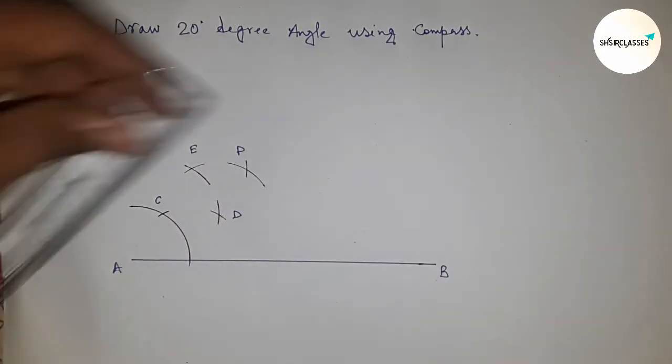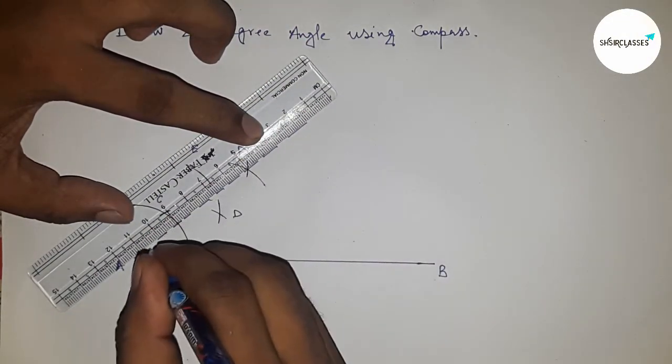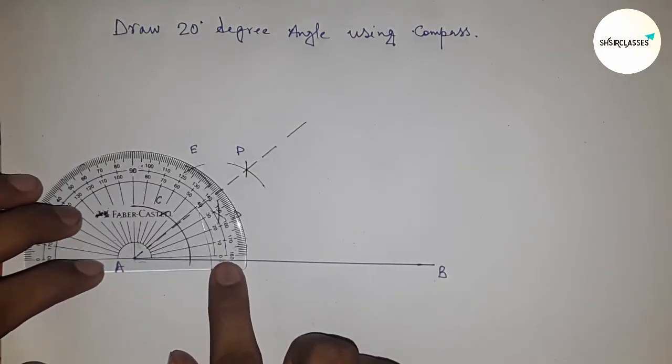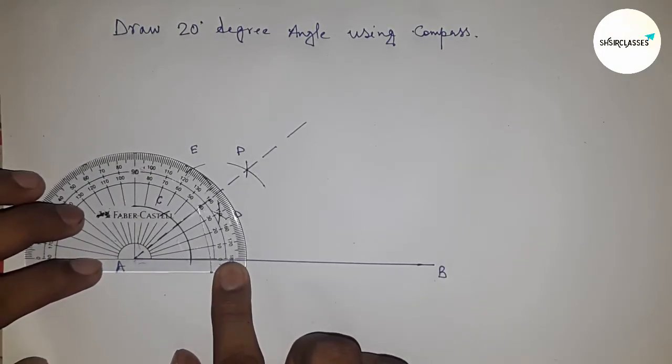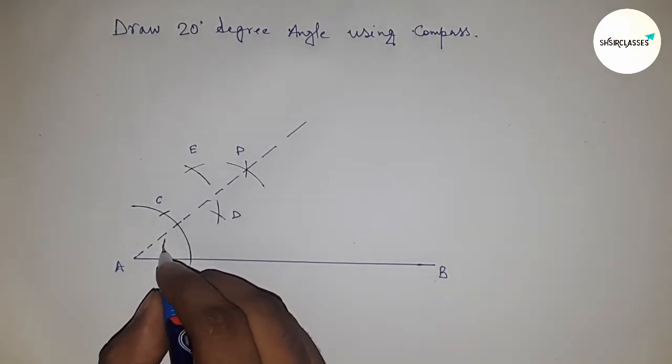Next, joining this to get a 40-degree angle. So the angle PAB is 40 degrees. Now checking whether it is 40 degrees or not. So this is perfectly a 40-degree angle.